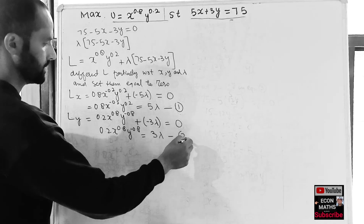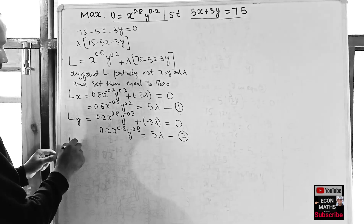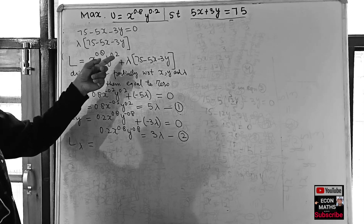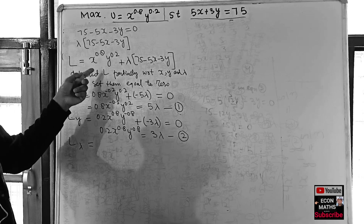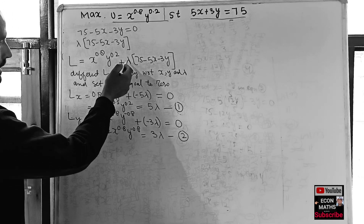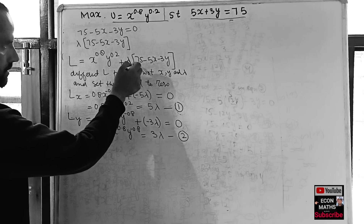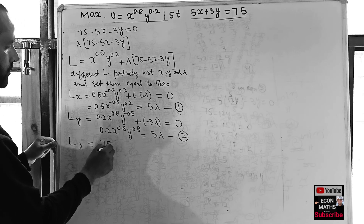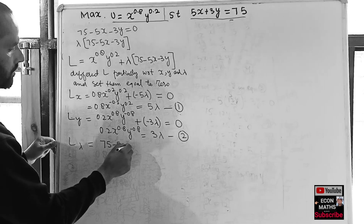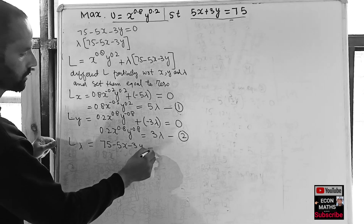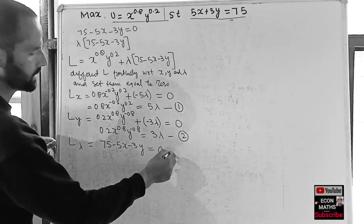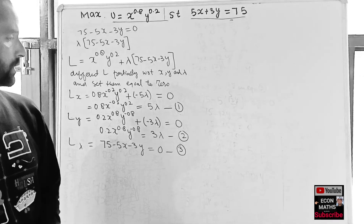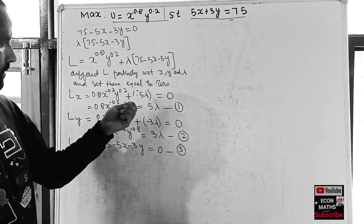Differentiating L with respect to lambda: since lambda appears with coefficient 1, this simply recovers the constraint: 75 - 5x - 3y = 0. Let this be Equation 3. Now to get the values of x and y, we will first eliminate lambda.